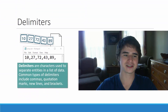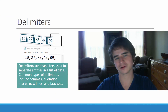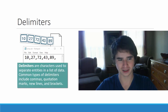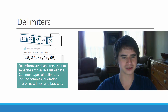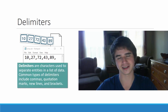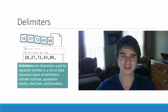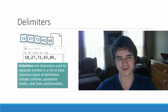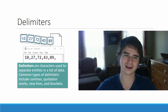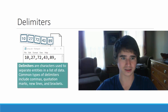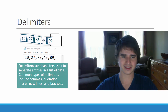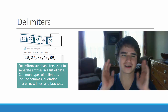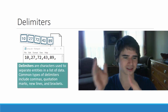To save an array to a file, we're going to use delimiters. Delimiters are characters which are used to separate entities in a list of data. Common types of delimiters include commas, quotation marks, new lines, brackets, parentheses — anything that you would use to group things together.